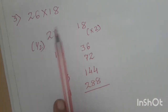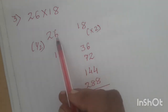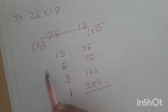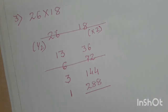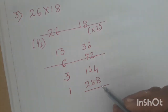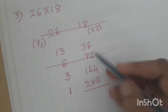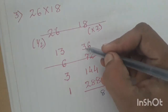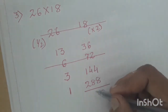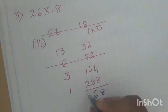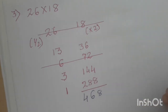Now cross out the rows with even numbers in the halves column. 26 is even — cross out this row. 6 is even — cross out this row. What's left in the doubles column: 36, 144, and 288. Adding: 6 plus 4 is 10, 8 plus 1 carryover gives 18, 3 plus 1 plus 4 is 8, plus carry gives 16, and 1 plus 1 plus 2 is 4. So the answer is 468.